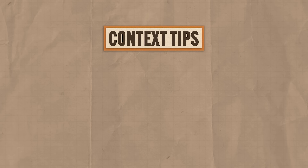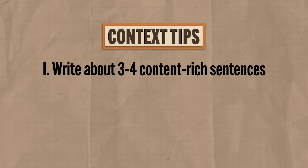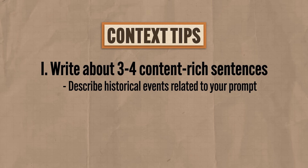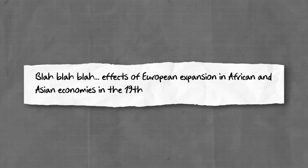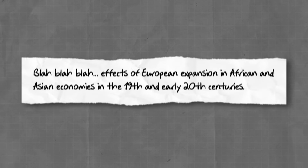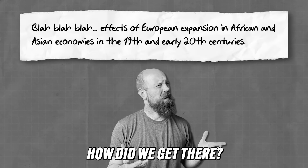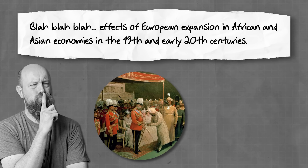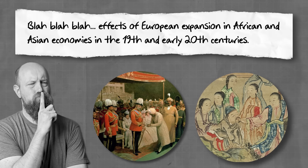By far the most intuitive way to earn the contextualization point is by explaining events that occurred before your given time period. Your contextualization should be about three to four content-rich sentences that describe historical events related to your prompt. So if your thesis argues about the effects of European expansion on African and Asian economies in the 19th and 20th centuries, your contextualization needs to go backwards in time and explain how we got there — exploring either the second wave of European imperialism, or African and Asian economies before the time period, or ideally both. Be specific — drop vocabulary words in.